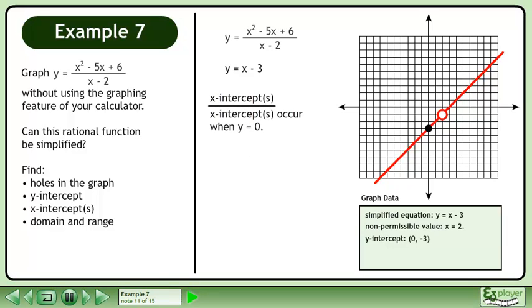Next, we'll find the x-intercepts. x-intercepts occur when y equals 0. Plug in 0 for y. Solve for x to get x equals 3.